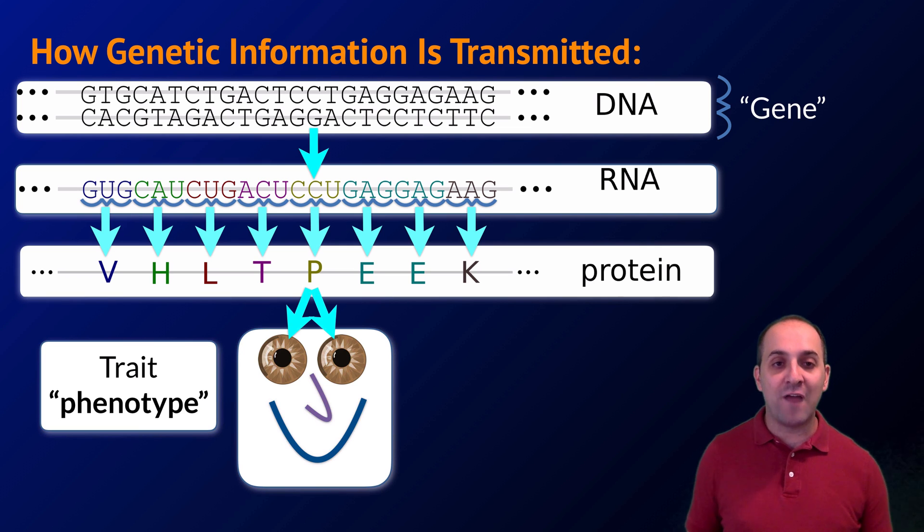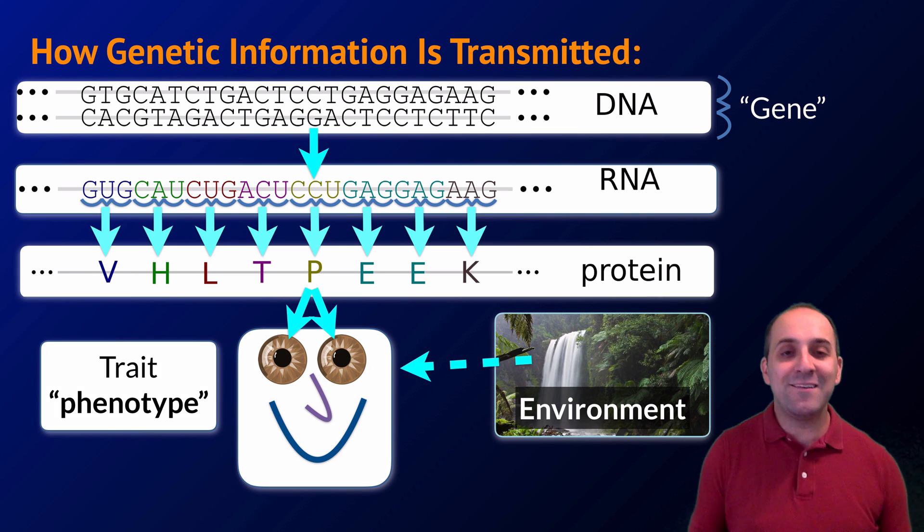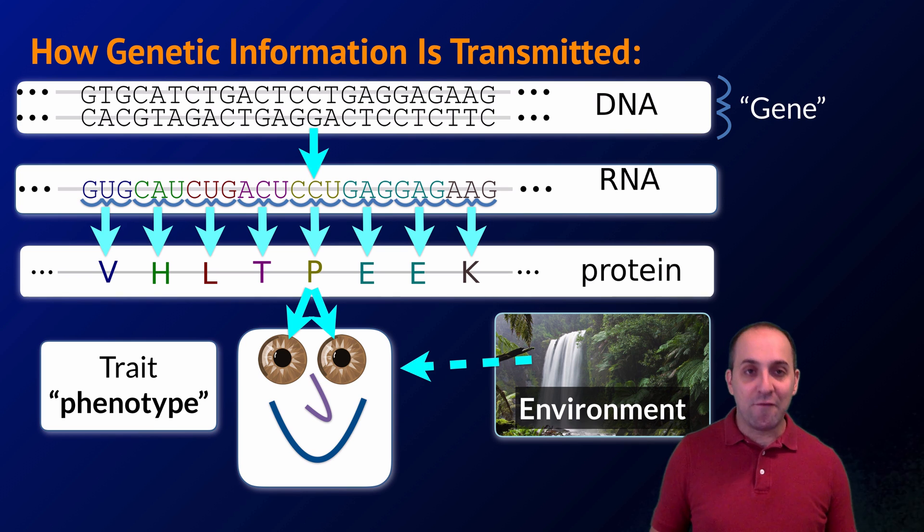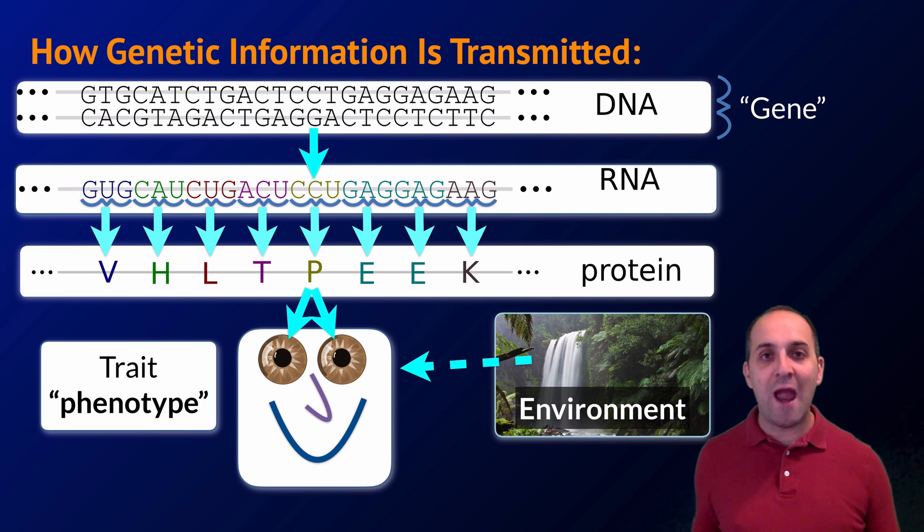In this particular example we're going to focus on the eye color phenotype in these fictitious smiley-faced organisms. Of course it's also really important to understand that it's not just genetic information that drives the production of phenotypes, the environment also plays a role. But living systems have no control over the environment. The only aspects of inheritance that living systems can influence are those aspects that are stored in the genetic information inside every cell. This is a modern understanding of how genetic information is transmitted and it's well beyond anything that Darwin ever understood.